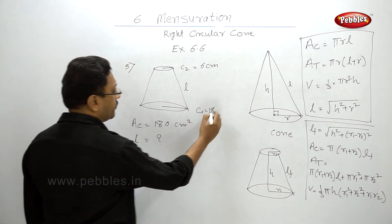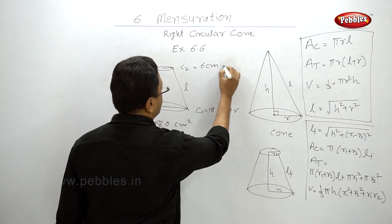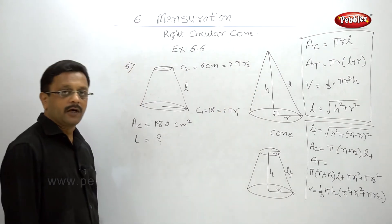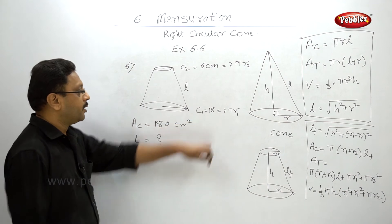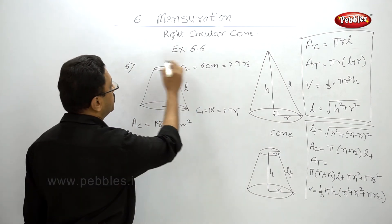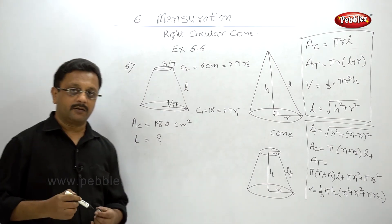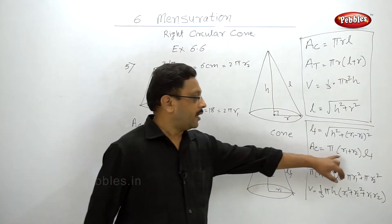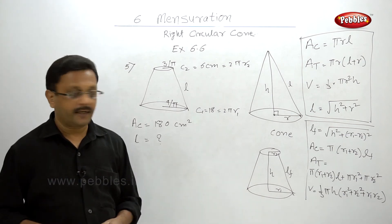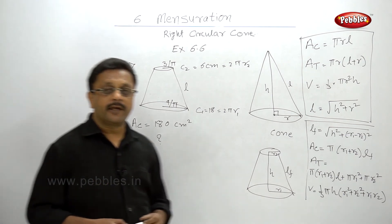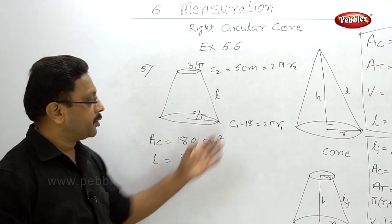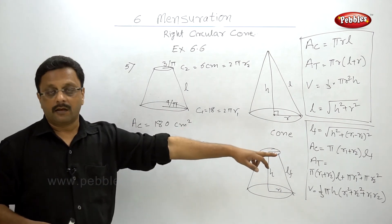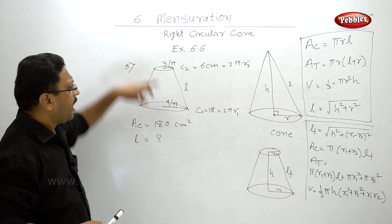Since circumference = 2πr, you can easily find r1 and r2. r1 = 9/π and r2 = 3/π. Now substitute into the curved surface area formula π(r1 + r2)l. The curved surface area is given, r1 and r2 are known, so only l is unknown.